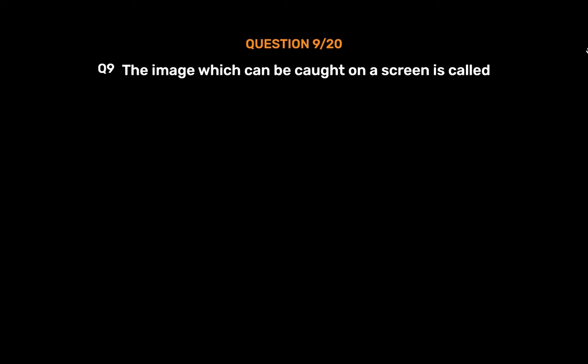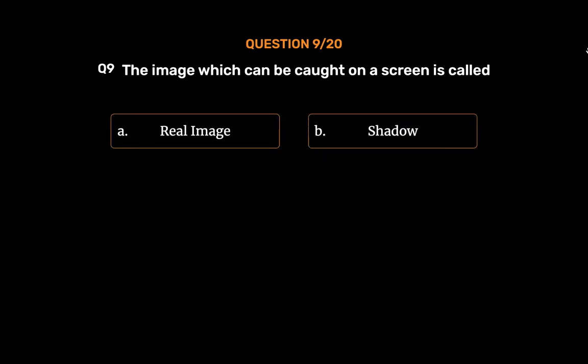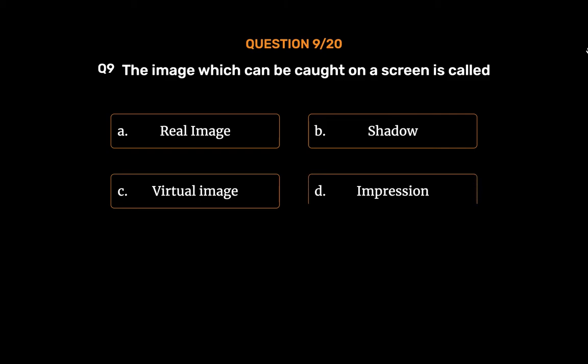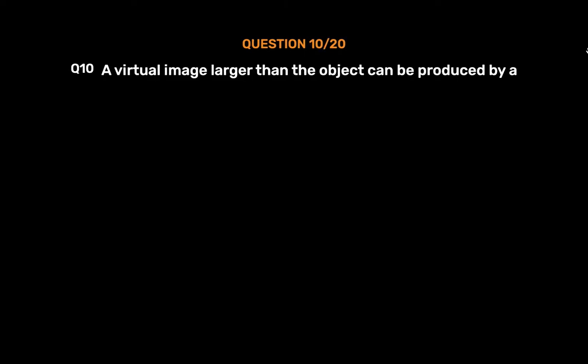Question No. 9: The image which can be caught on a screen is called — Option A: Real Image, Option B: Shadow, Option C: Virtual Image, Option D: Impression. The correct answer is Option A: Real Image.